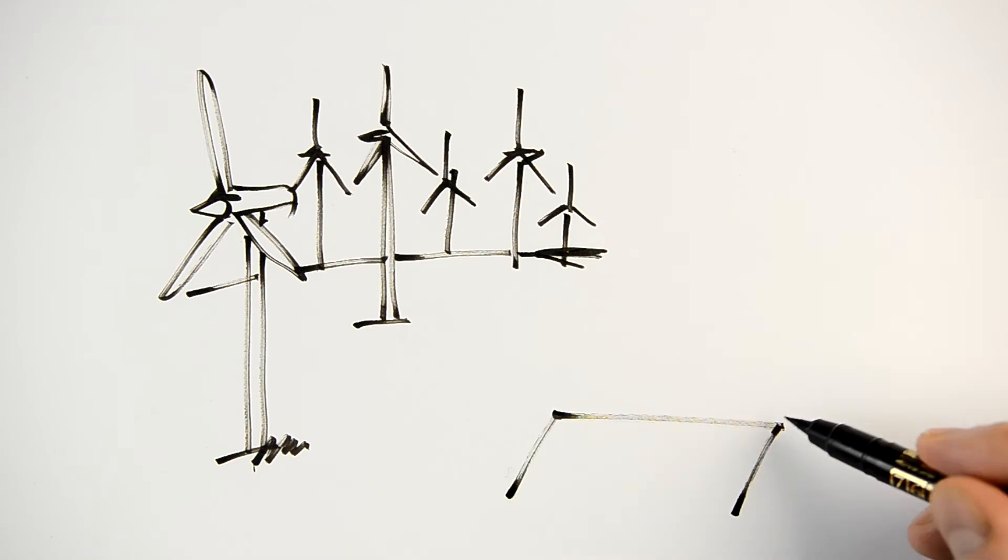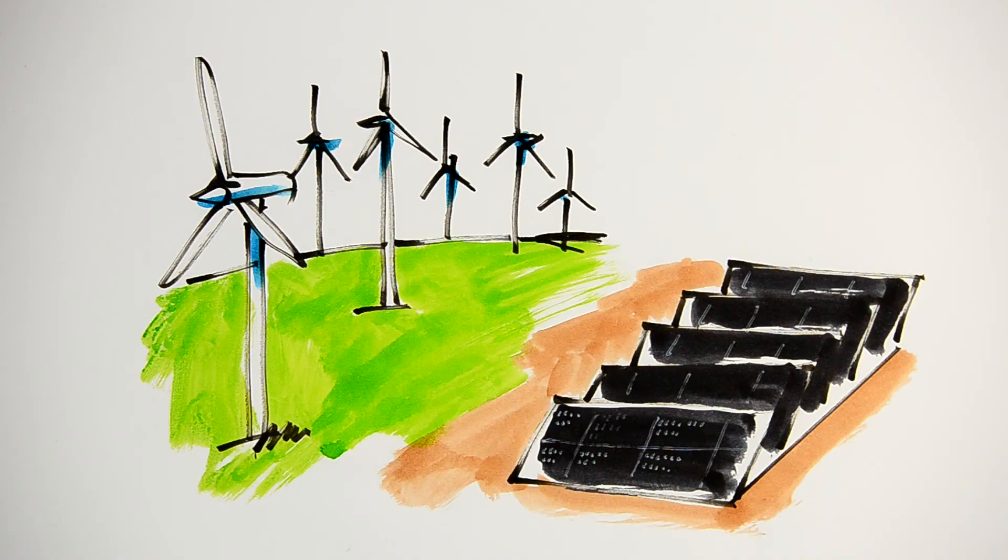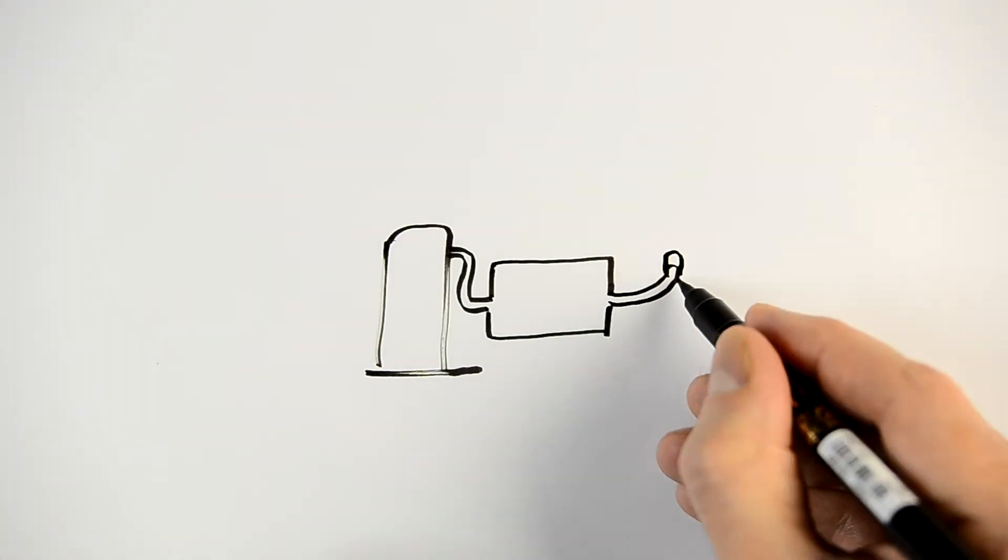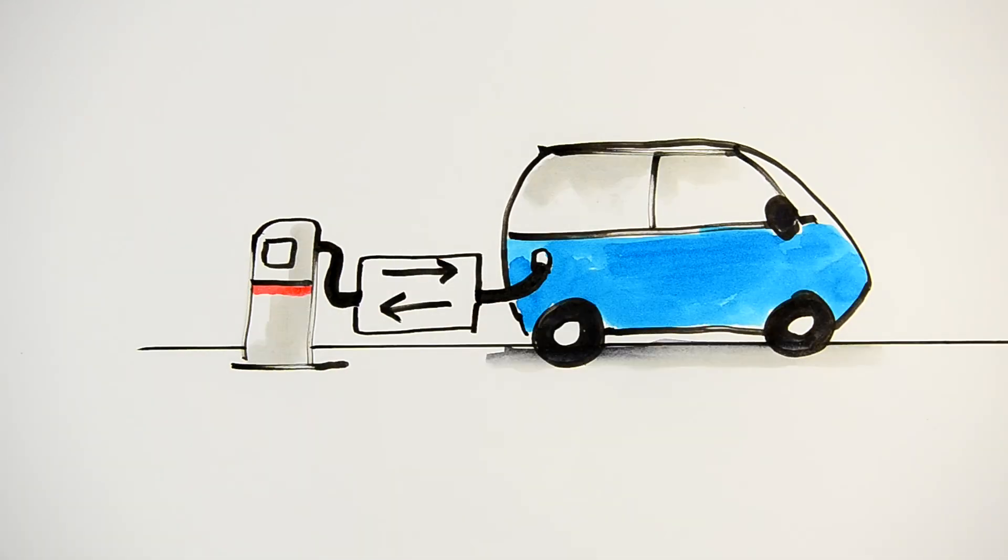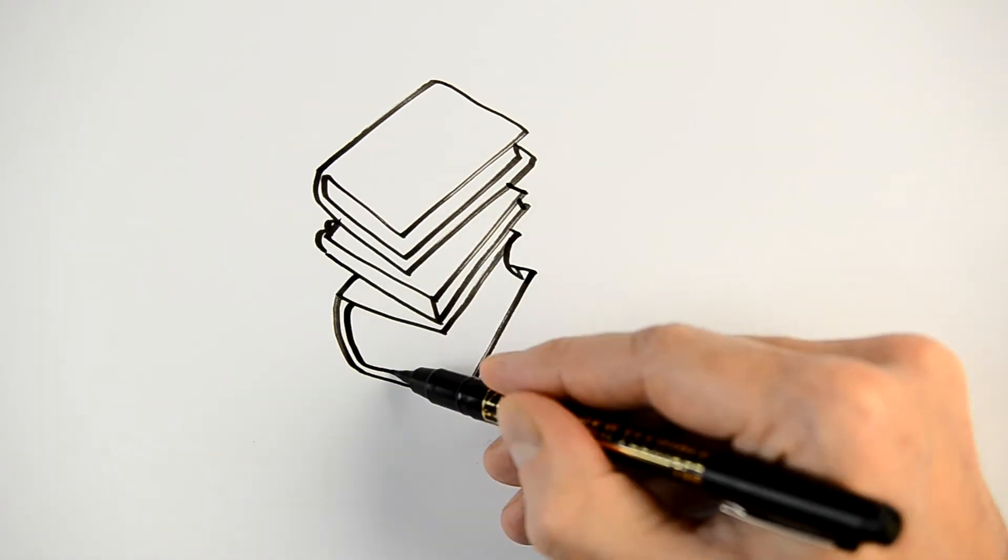This electricity must come from renewable energy sources. Infrastructure will change considerably to adapt to the electric car, including charging points and smart networks where batteries play an integral role in electricity storage.